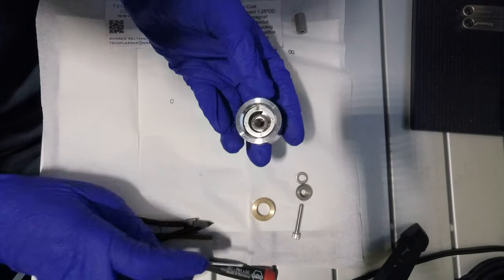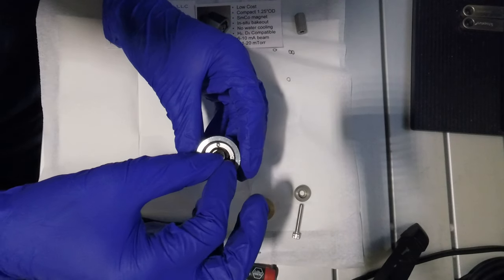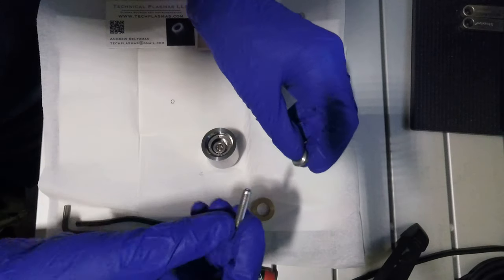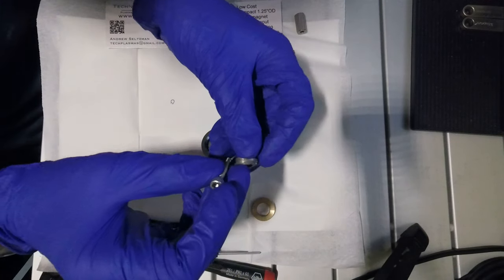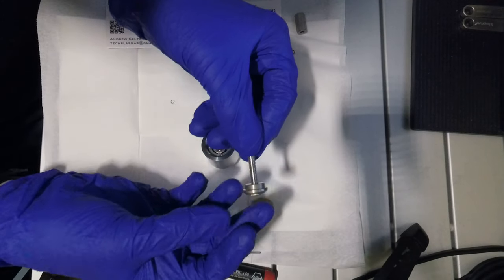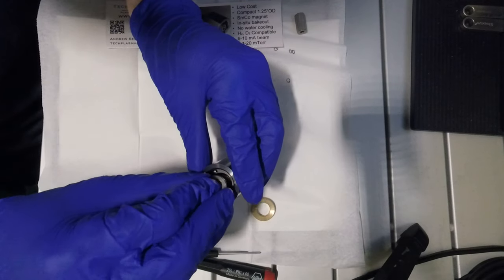After the anode ring is installed, place a shim washer on top of the stack of magnets. Insert a vented 1032 screw through the center pole piece. Insert the center pole piece through the magnet stack.